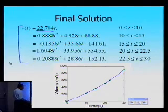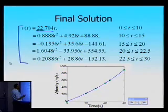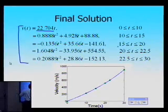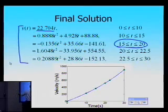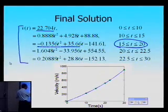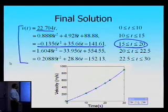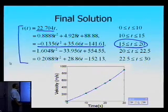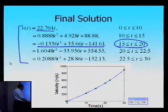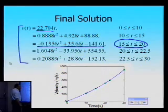You've got to understand that each of these splines are valid between a certain point. For example, if I'm looking for any value of velocity between 15 and 20, that is the only spline which I can use — other splines are not valid for the range between 15 and 20. That's something which you have to be careful about whenever you're using spline interpolation: each spline has a valid domain.